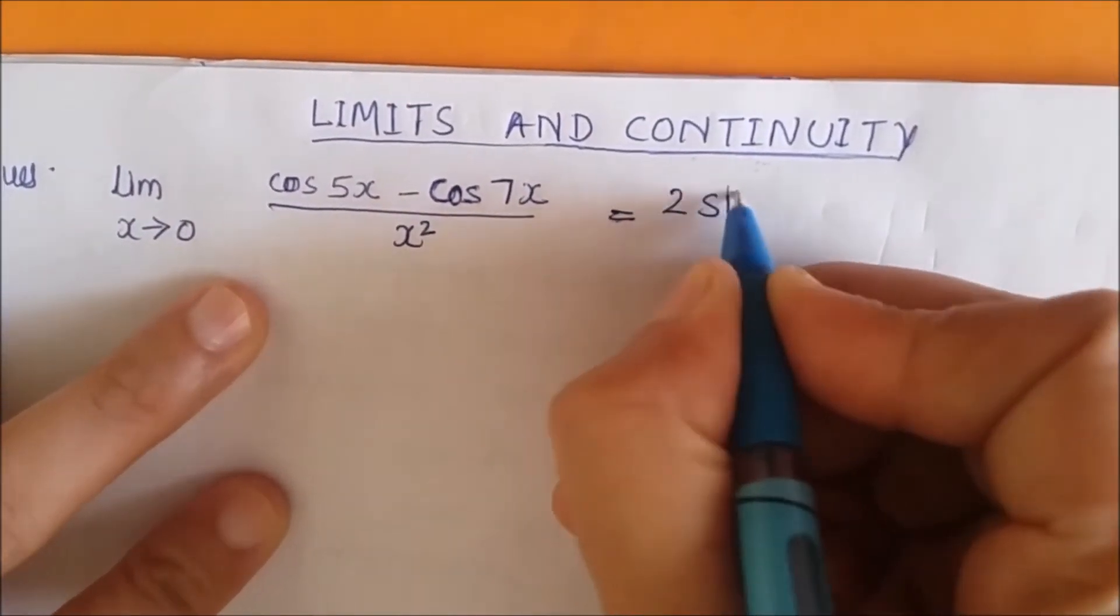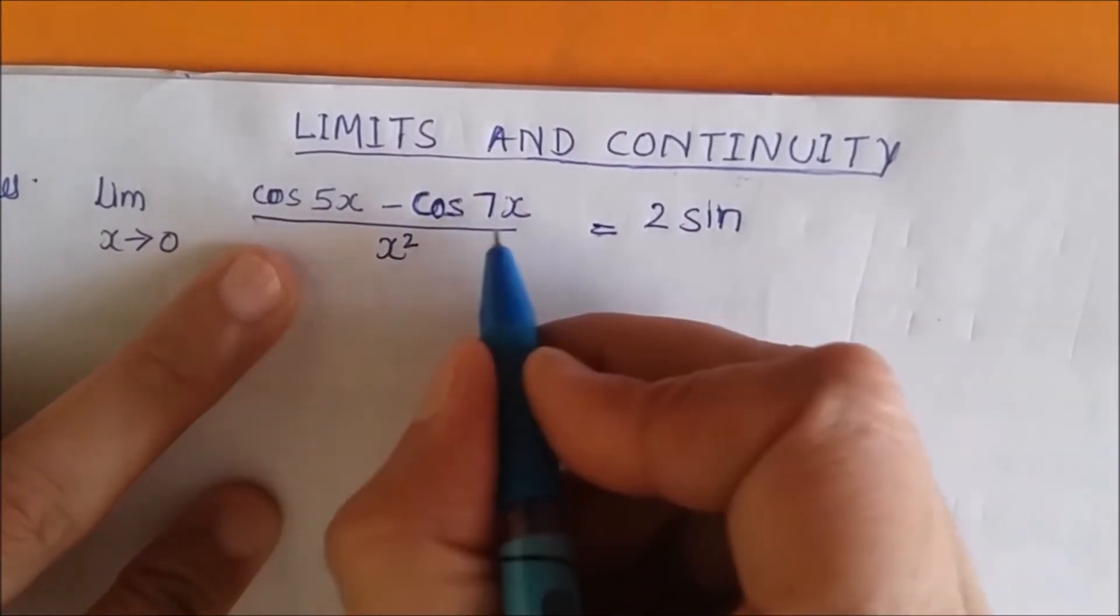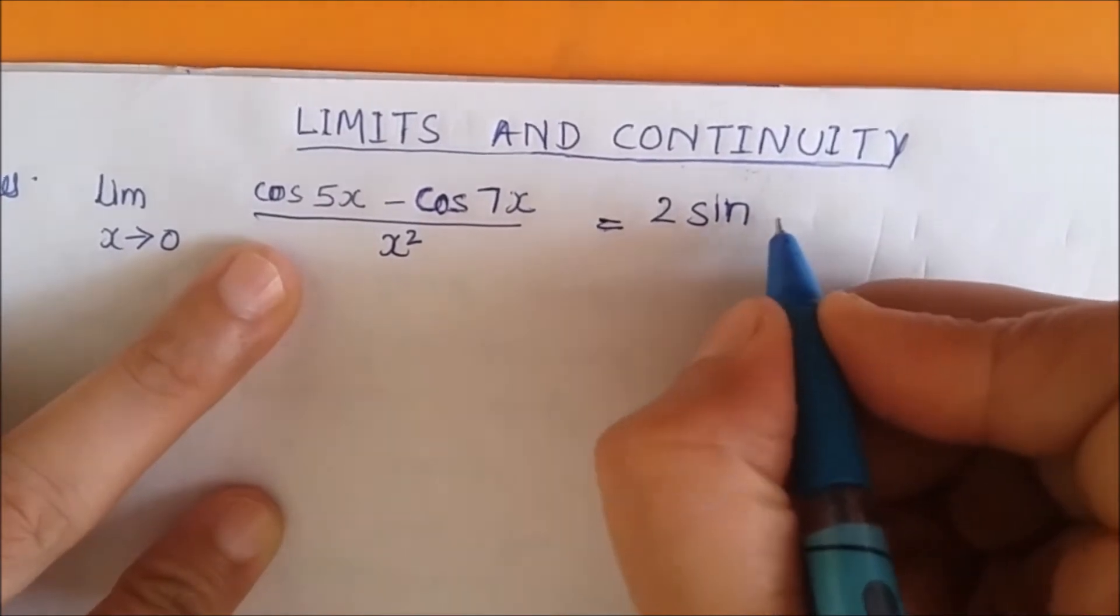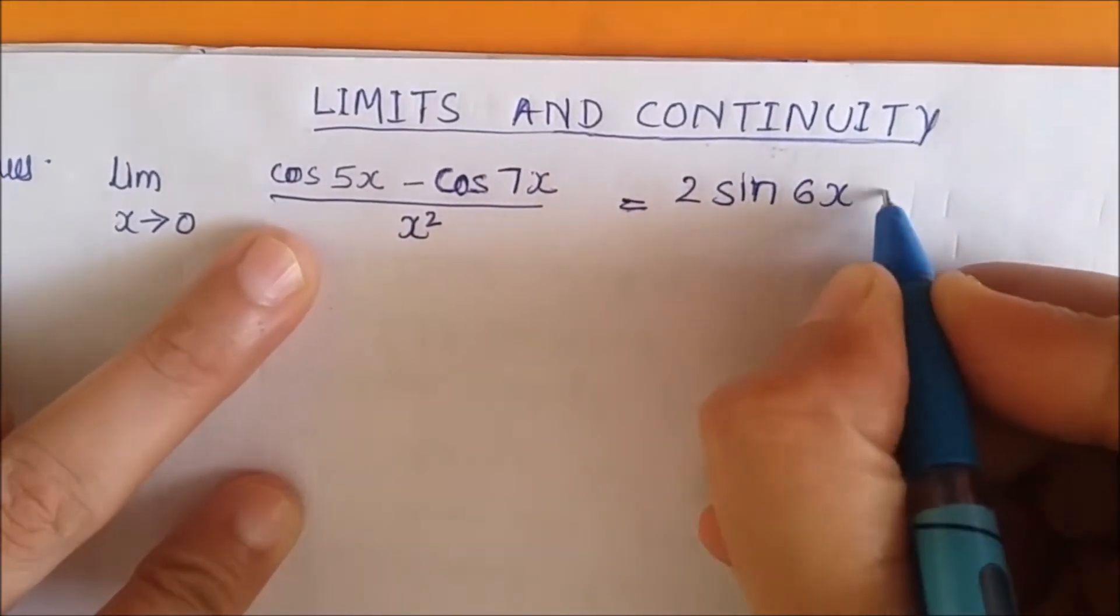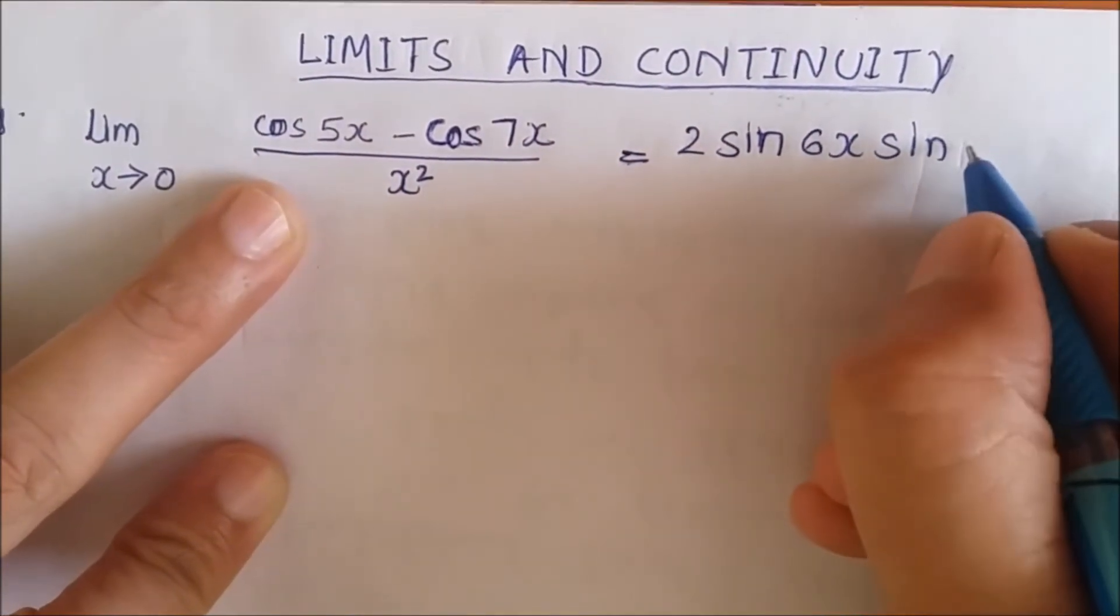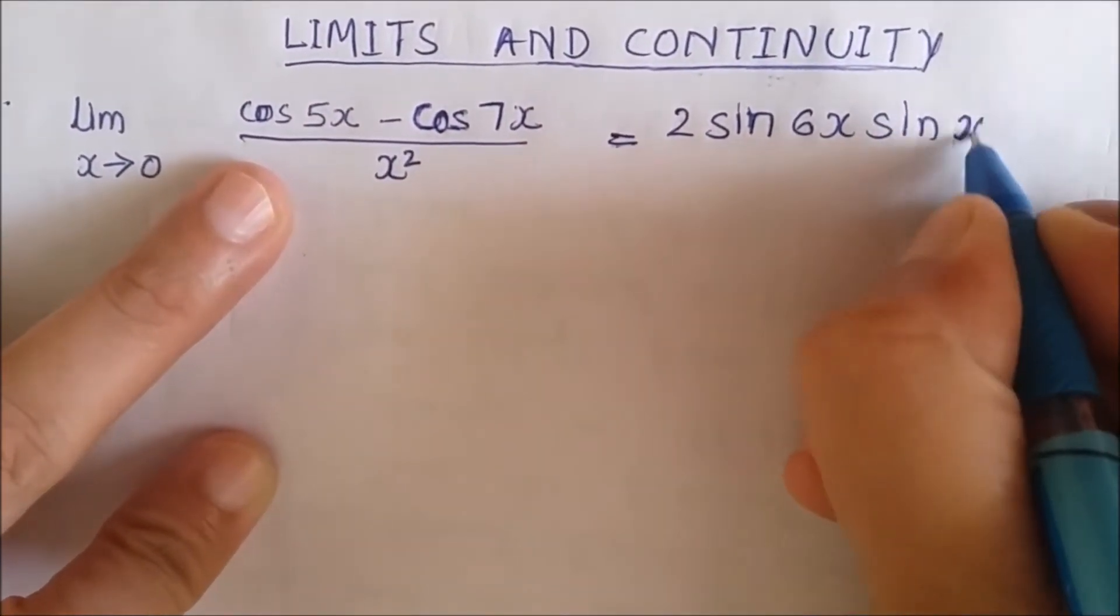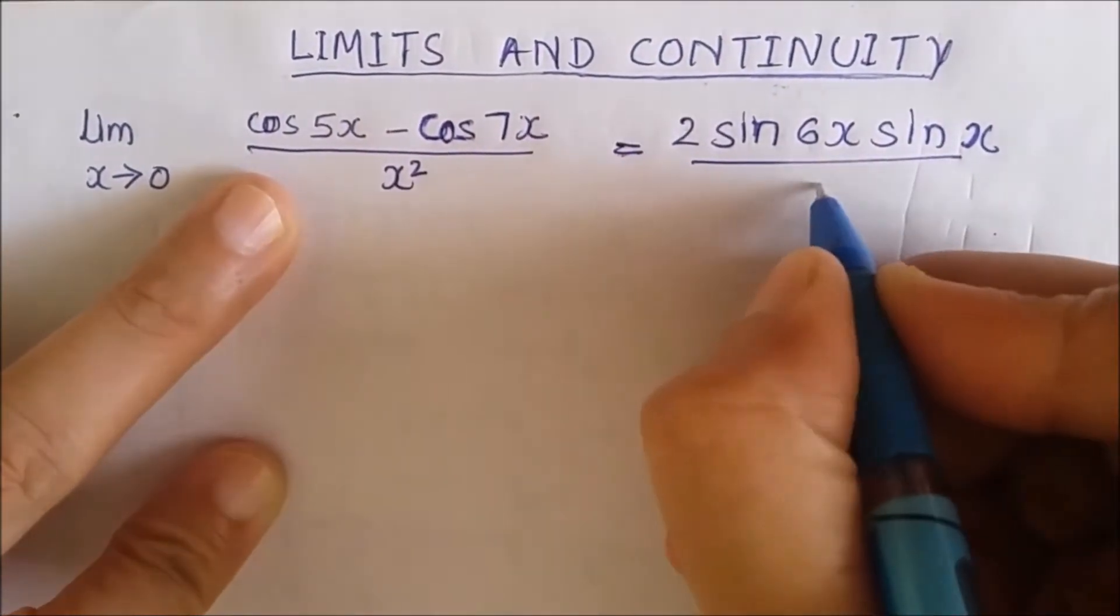So this is 12x/2, that is 6x, then sin (d-c)/2. This is sin (7-5)/2, so this is sin x divided by x square. Of course limit is also there, x tends to 0.